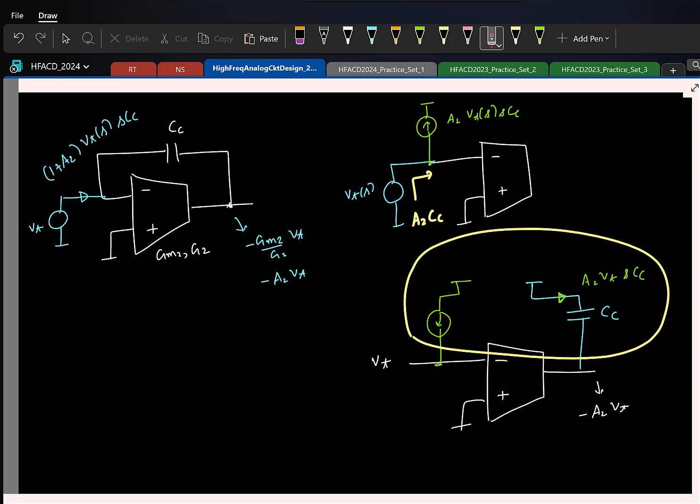So, I need to have something that basically senses the current in one branch and then copies the current to another branch. In other words, it is a current source but its current is dependent on another current. So, what element does it? Current controlled current source. And what is the simplest current controlled current source you know? Common gate. Current controlled current source is a current buffer. So, you just have to use a common gate.